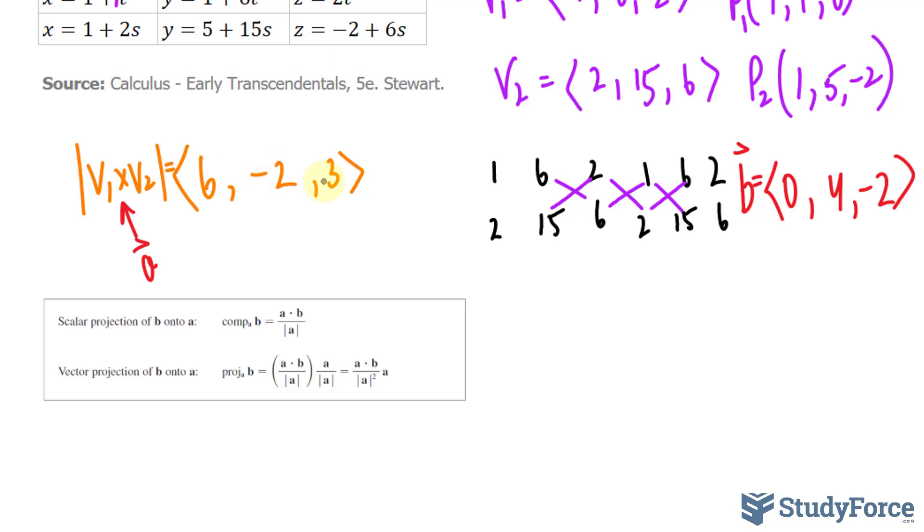We'll take the dot product of these two vectors, 6 times 0, that's 0, plus negative 2 times 4, that's negative 8, plus 3 times negative 2, that's negative 6. Negative 8 plus negative 6 is negative 14.